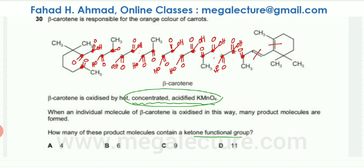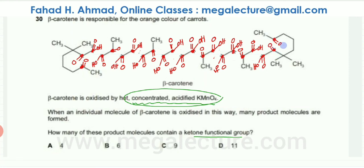Nearly at the end. The next double bond breaks: this carbon atom is only bonded on one side, giving a carboxylic acid, and the other is also only bonded on one side — another carboxylic acid. Finally, the last double bond: both carbon atoms were bonded on both sides by carbon chains, so both change into ketones.